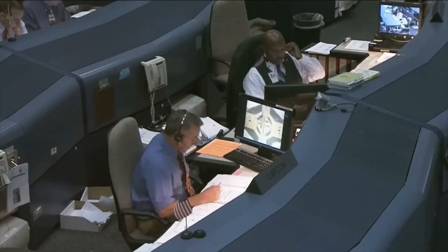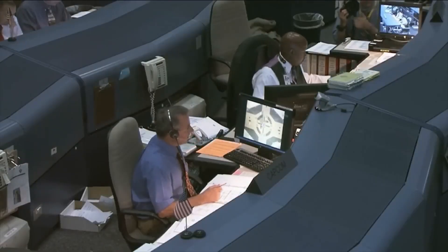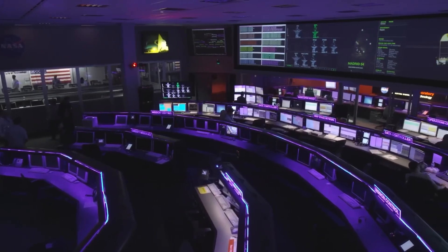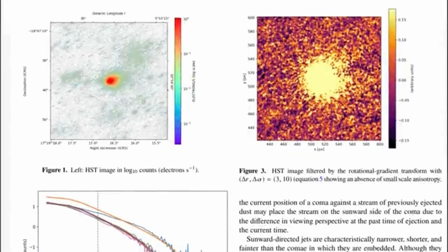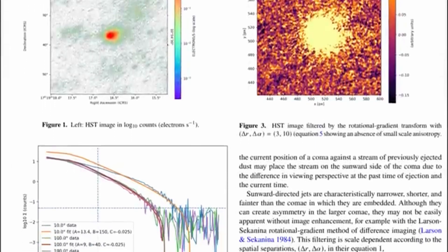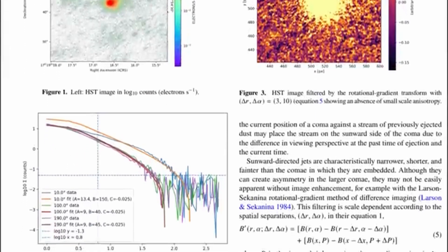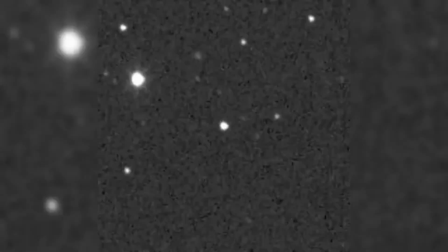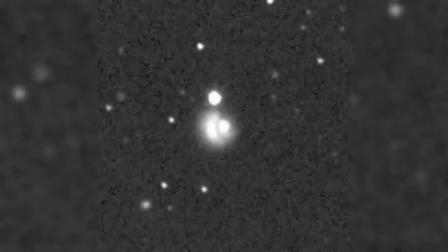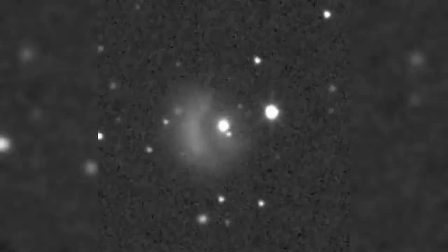Astronomers monitoring 3i Atlas earlier in its journey noticed something strange. The object's trajectory was deviating slightly from the path predicted purely by gravitational interactions with the Sun and planets. These deviations were subtle but measurable. An acceleration of approximately 5x10^-7 astronomical units per day squared. That might sound obscure, but it means some force other than gravity was acting on the object, altering its motion by a measurable amount.